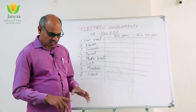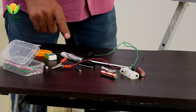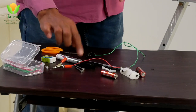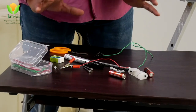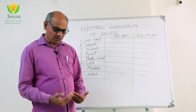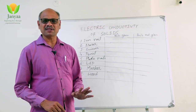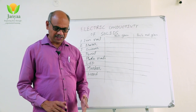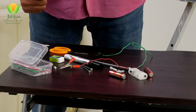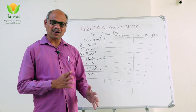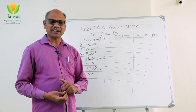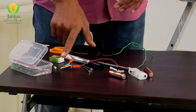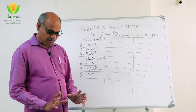Let us test some materials. I have collected an iron nail, eraser, marker pen, pencil, scissors, plastic nails, and other items. Materials that allow current to pass through them are called conductors; those that do not are called insulators. Sometimes we also say semiconductors — substances like germanium, gallium, and silicon that allow current under particular conditions. In LEDs, semiconductor material is already used.